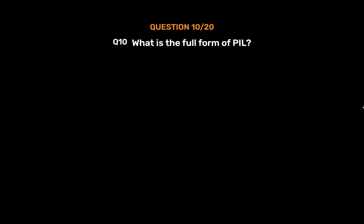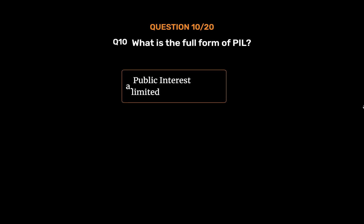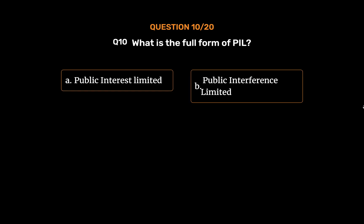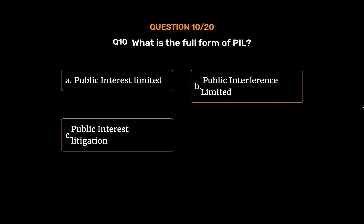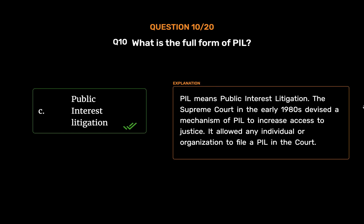Question No. 10. What is the full form of PIL? Option A: Public Interest Limited. Option B: Public Interference Limited. Option C: Public Interest Litigation. Option D: None of these. The correct answer is Option C: Public Interest Litigation. PIL means Public Interest Litigation. The Supreme Court in the early 1980s devised a mechanism of PIL to increase access to justice.